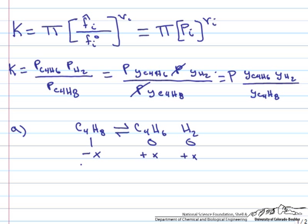So if we start with this, our change will be minus X, plus X, plus X. So at the bottom here at equilibrium, we'll have 1 minus X moles of C4H8, X moles of C4H6, and X moles of H2. So the total number of moles is equal to, if we just add up at equilibrium here, 1 minus X plus X plus X will be equal to 1 plus X.